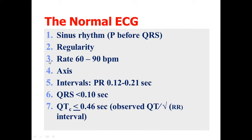How do we interpret ECG? Interpretation of ECG starts with assessing the rhythm — is it sinus or non-sinus? In the second place, we should assess regularity: is the rhythm regular or irregular? Then we should calculate the heart rate.